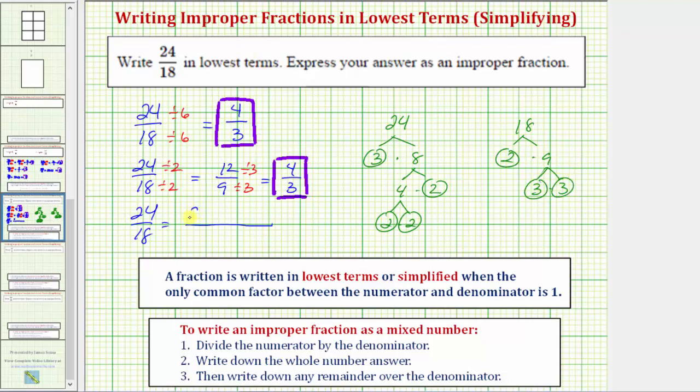So we can write 24 as two times two times two times three, and 18 as two times three times three.